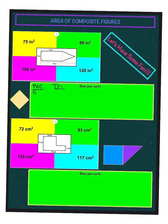To find the area of a rectangle, it is length times width. In our rectangle, we have measurements of 12 and 5. When we multiply 12 times 5, we get 60, so the area of our rectangle is 60 inches squared.